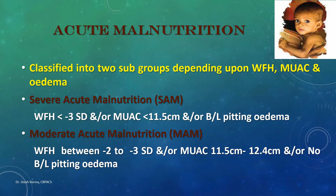Acute malnutrition can be divided into two subgroups: SAM (severe acute malnutrition) and MAM (moderate acute malnutrition). The basis for classification is weight for height, mid-upper arm circumference, and the presence or absence of edema. SAM is defined when weight for height is less than minus three z-scores, and/or MUAC is less than 11.5 cm, and/or there is presence of bilateral pitting edema. Any one, two, or all three of these criteria indicate SAM.